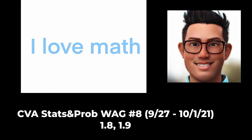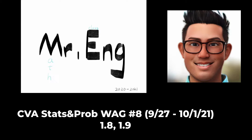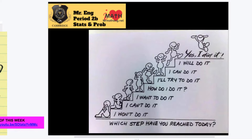Hey, CBA stats students. Which steps have you reached today? Sometimes teenagers, especially when you get discouraged, say like, I don't want to do it, I can't do it. Maybe I want to do it. How do I do it? To ask a better question — at least a statement: I'll try. I can do it. I will do it. Or even saying, yes, I did it.